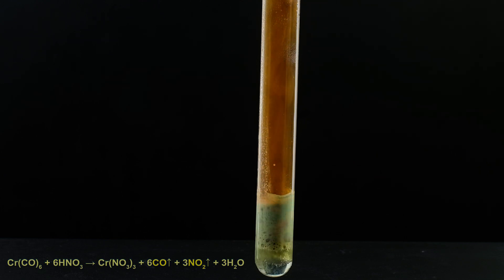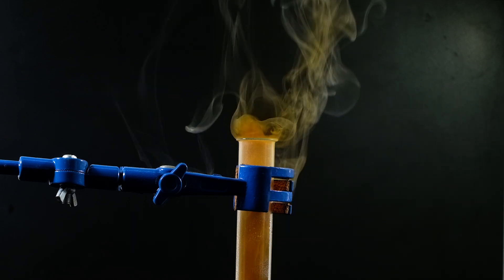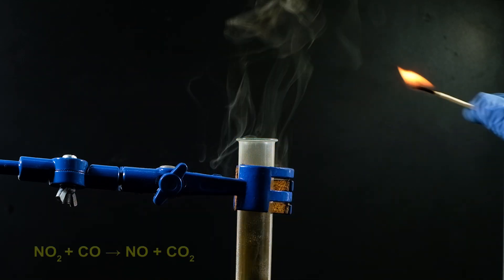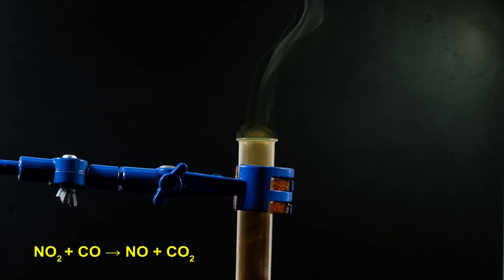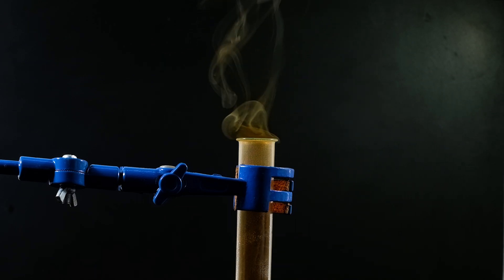To demonstrate this reaction, setting the evolved gases from the test tube on fire is just enough. Notice how instantly the orange color of nitrogen dioxide disappears after the flash, and how quickly it reappears. It will be seen a little clearer on white background.